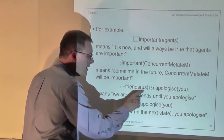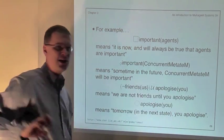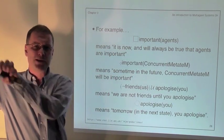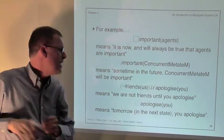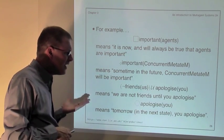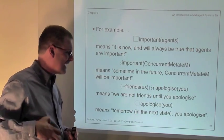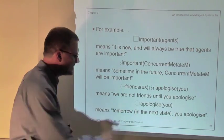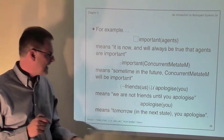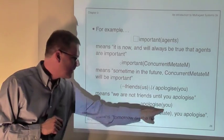So in the until example: 'not friends U apologize-you' means at some point in the future you apologize, and at all time points until we get there, we are not friends. The model of time that underpins Concurrent MetateM is a discrete model with the idea of next states. This circle operator refers to those next states — it means in the next state (i.e., the next decision cycle), the formula holds.